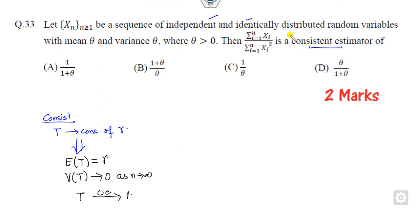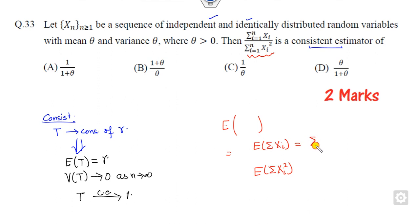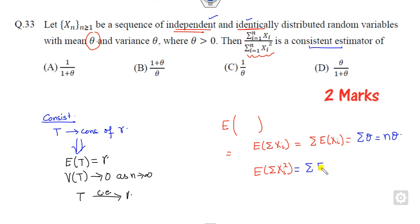Since it is given as a consistent estimator, what you need to do is find the expected value of the given expression. You can find the expected value of the numerator by noting that the summation is outside, and since the variables are identically and independently distributed with a known mean, the expected value of the numerator simplifies directly. Since the variables are independent, you can write the summation of expected values.